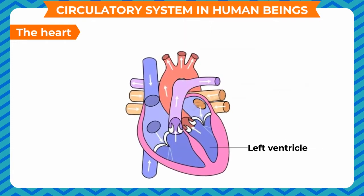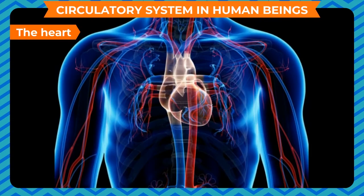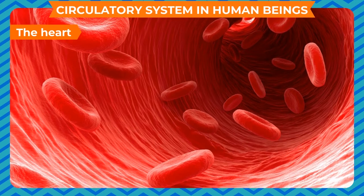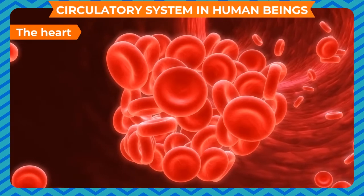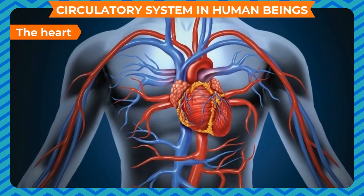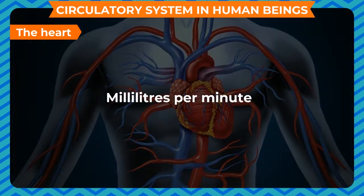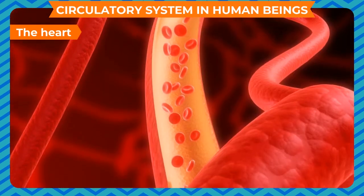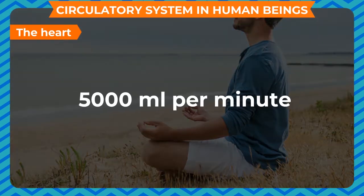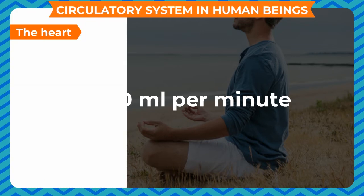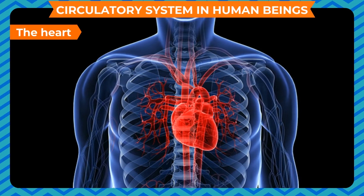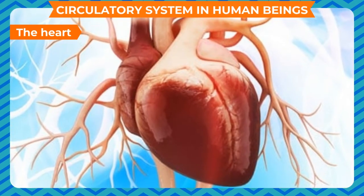The left ventricle pumps the oxygenated blood to all parts of the body. Blood flow is simply the quantity of blood that passes through a given point in the circulation in a given period of time, ordinarily expressed in milliliters per minute. The overall blood flow in an adult person at rest is about 5000 milliliters per minute, which is called the cardiac output — the amount of blood pumped by the heart in a unit period of time.